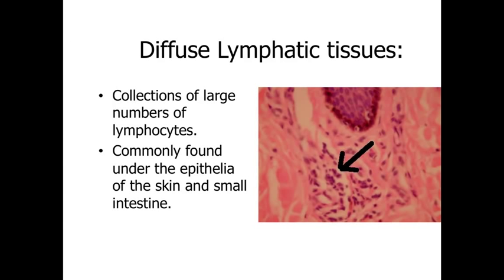With the diffuse lymphatic tissues, what we're looking at is essentially locations where we're going to have large numbers of lymphocytes — white blood cells. These are commonly going to be found underneath the epithelia of the skin or in the small intestine, basically in locations of the body that may be subject to invasion by foreign pathogenic materials. If we have damage to the skin, it's possible for bacteria or some other harmful substance to get through the normal protective mechanism, and you want these lymphocytes to be present to recognize a potential pathogen.